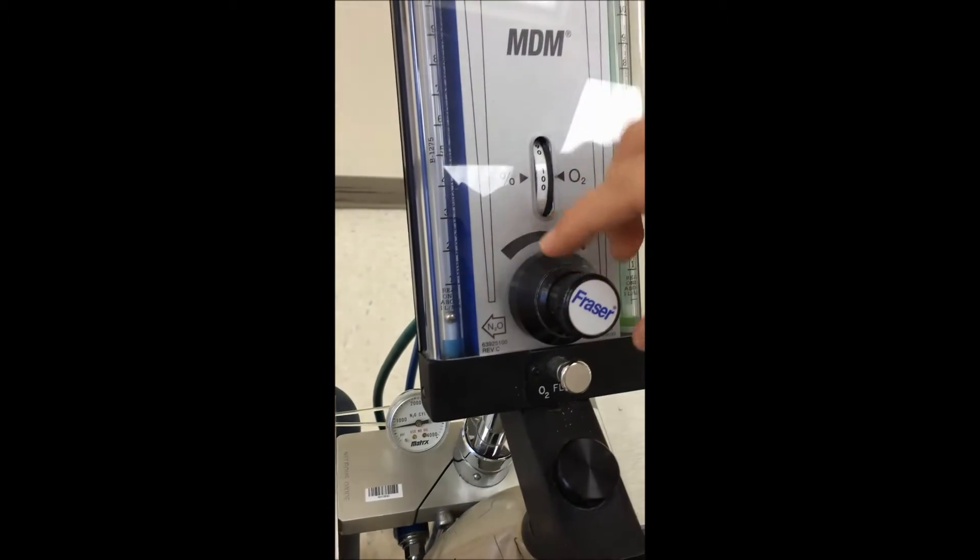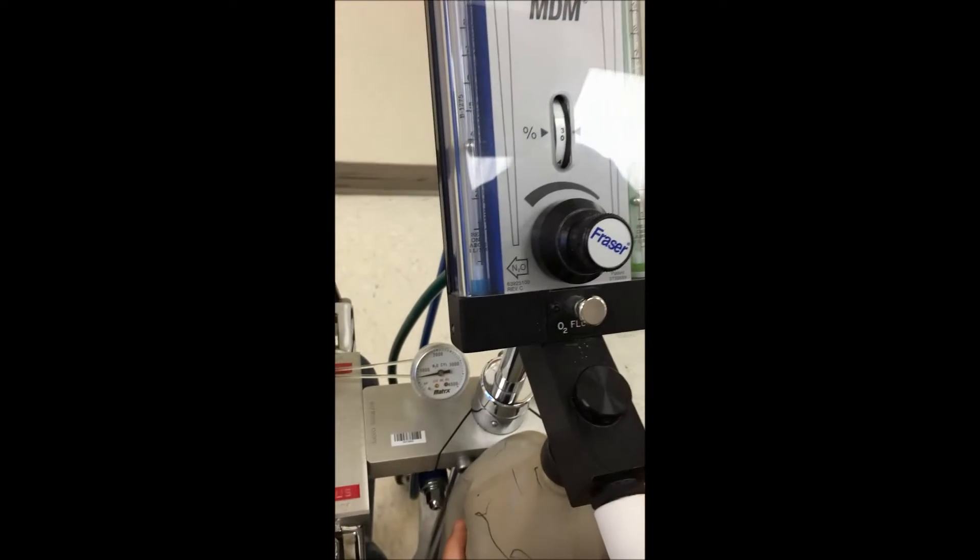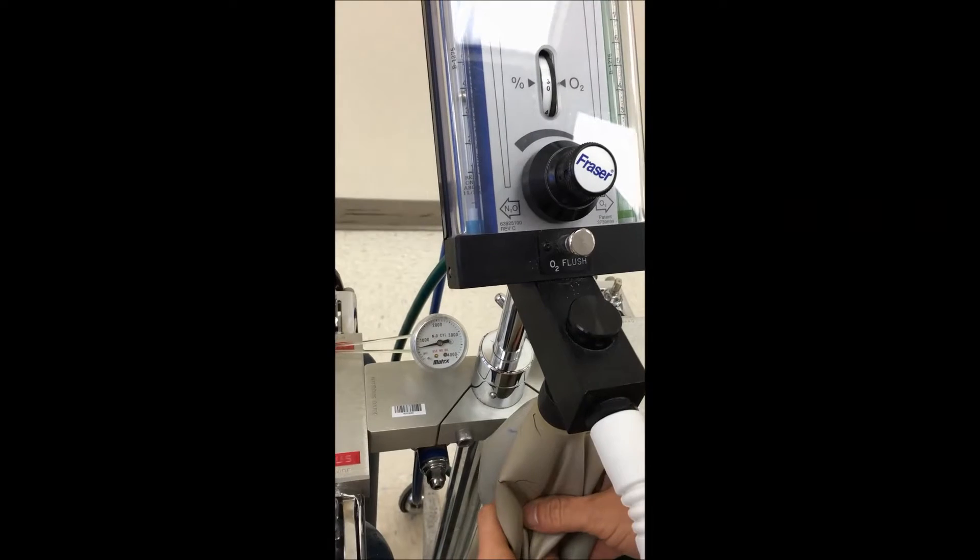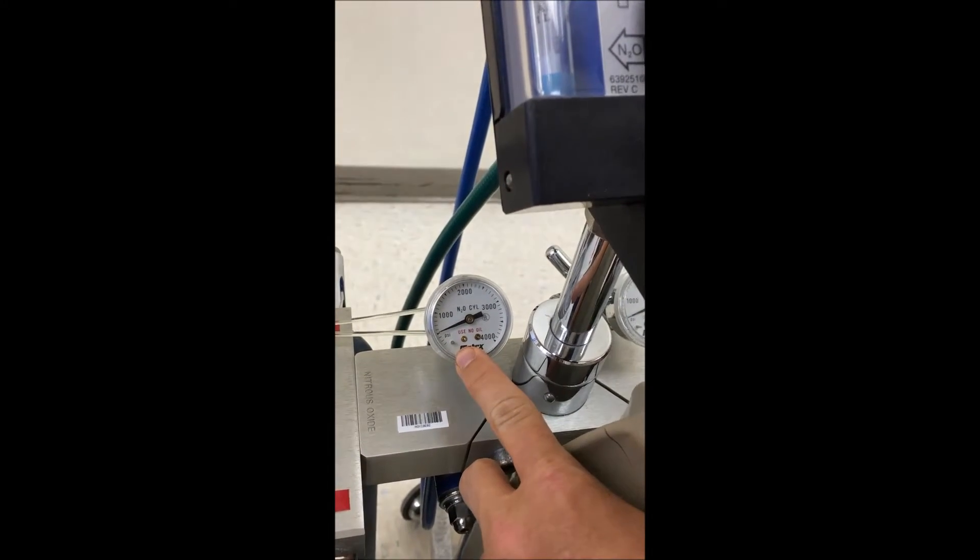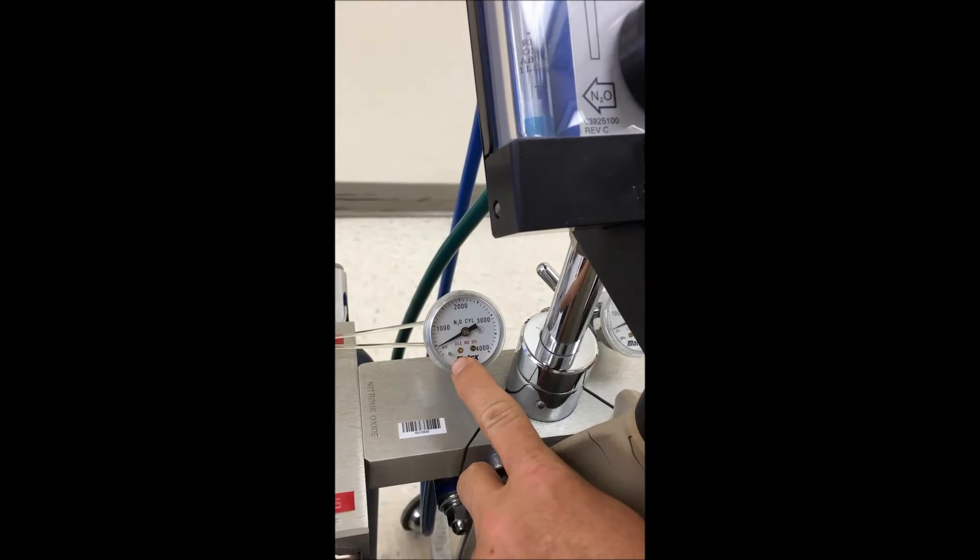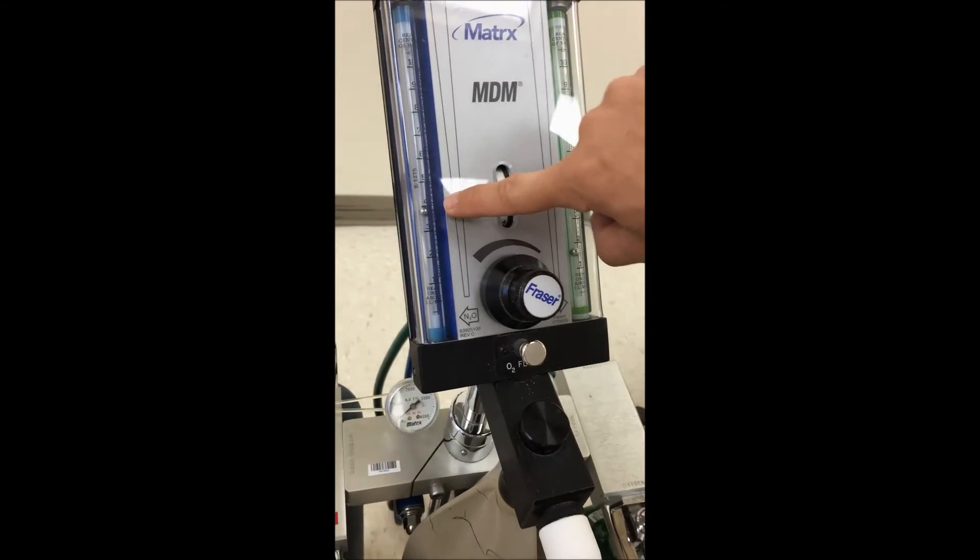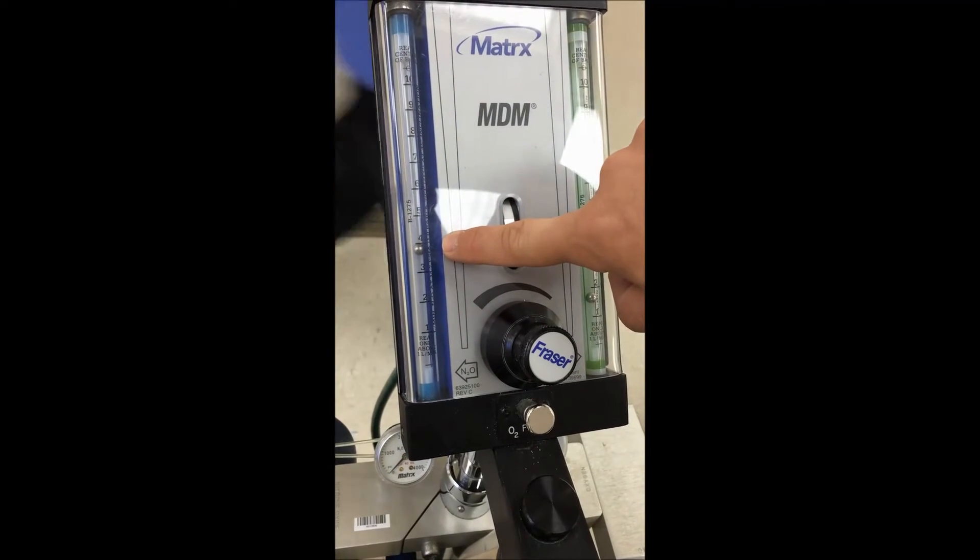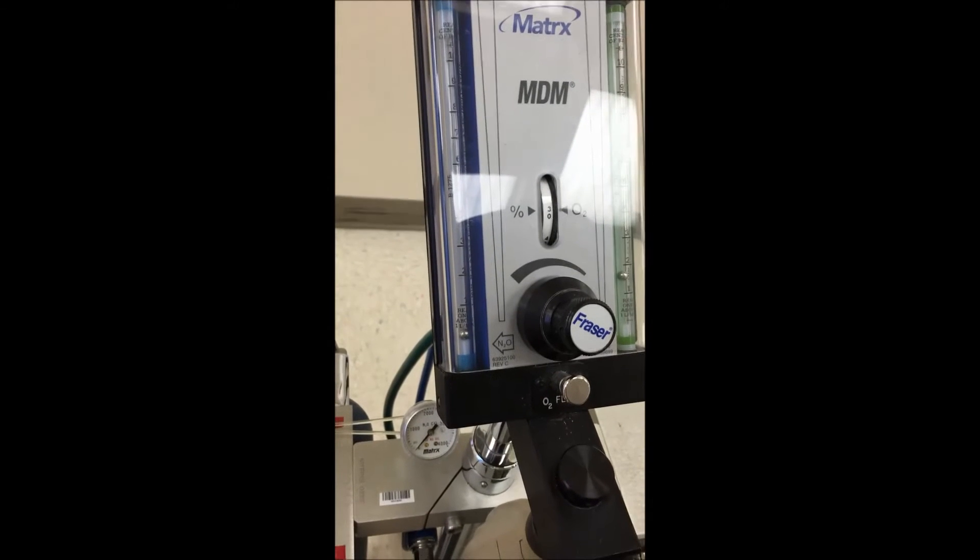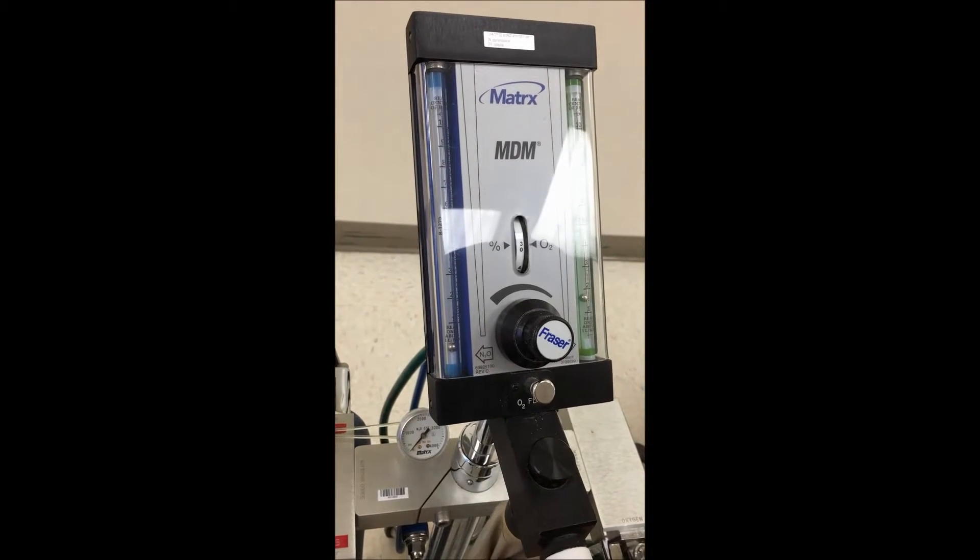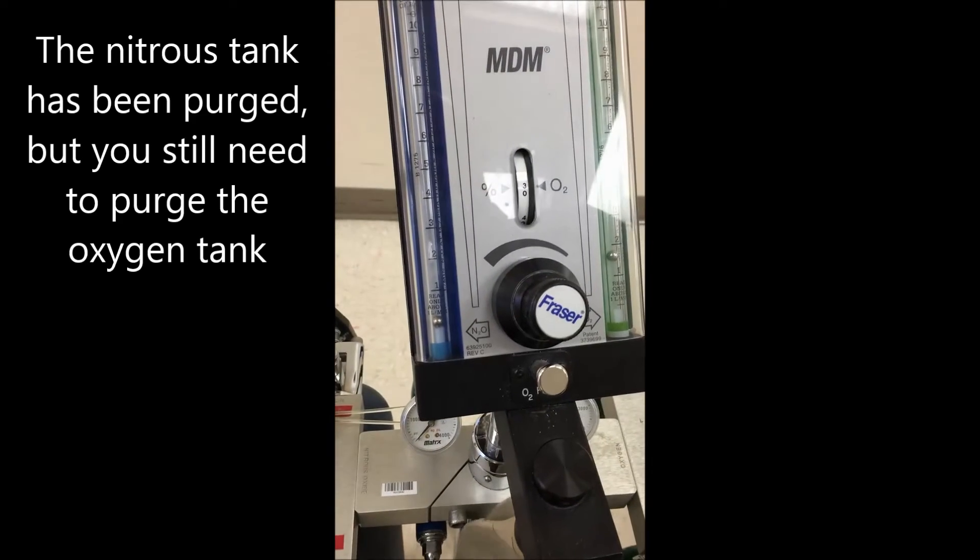We go and we turn up the nitrous. If we squeeze it, it goes a little bit faster, and notice that we're purging that tank and it's going down to zero. Notice when it gets all the way to zero, that ball is going to fall down to nothing. There is no longer any nitrous other than inside the blue tanks.